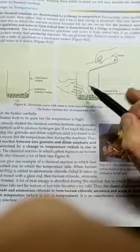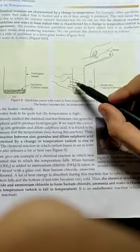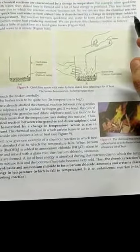CaO is called quicklime. Ca(OH)2 is called slaked lime. So here you can see, when you touch the beaker, it will generate heat. So we will call it exothermic reaction.